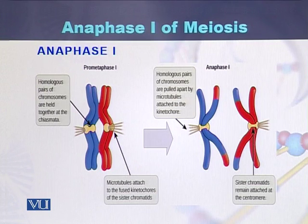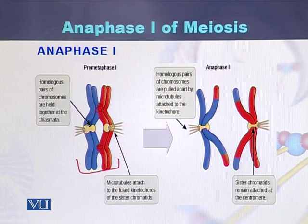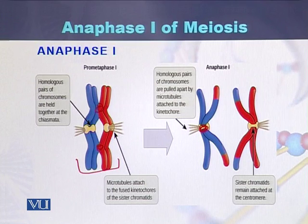Here is the chiasmata formation. We can see that chromosomes are joined with each other — these are the homologous chromosomes held together during the chiasmata. The chromosomes move with the centromere, and the kinetochore is present within the centromere.